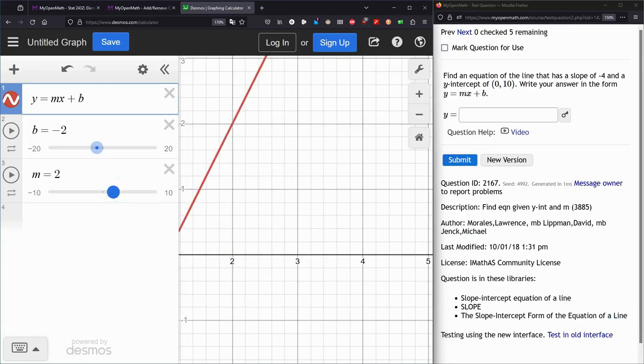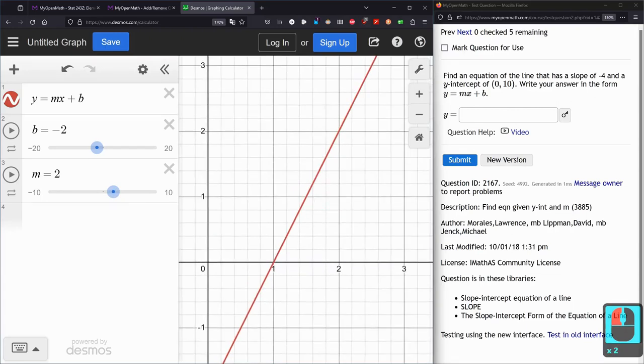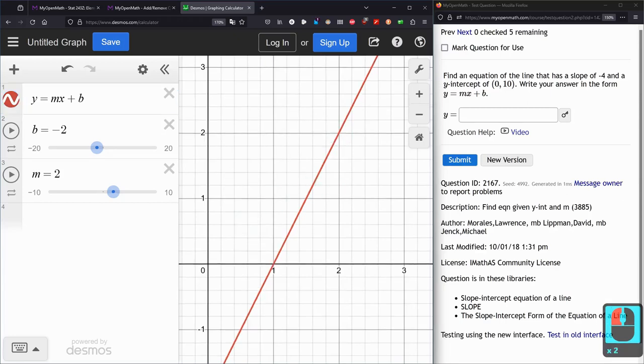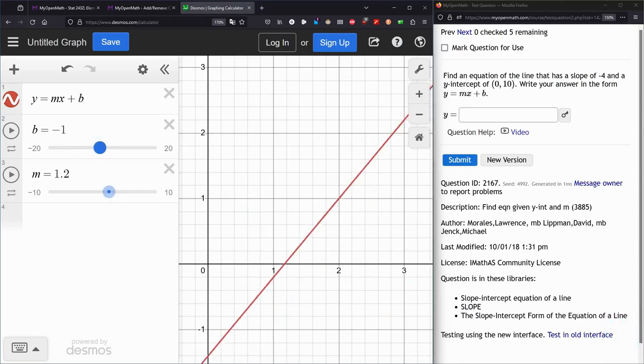If I make the slope 2, that means when I go over 1, I go up 2. So here we have 1, 0. And then 2, 2. Because I went over 1 and up 2. We can play around with the slope right here.